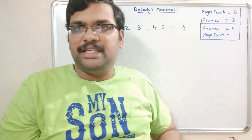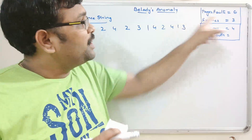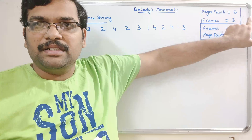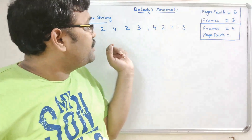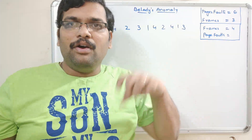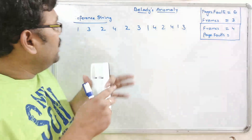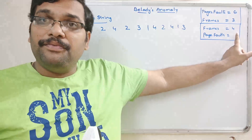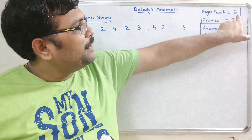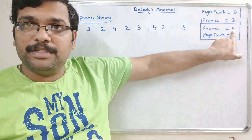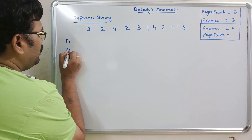Let us revisit the reference string solved in the previous session. With 3 frames we got 6 page faults. I'll post a link to the FIFO page replacement algorithm video in the description so you can review it. Now we will solve the same reference string with 4 frames. We should get fewer than 6 page faults since we are increasing the number of frames. The frames are F1, F2, F3, and F4.